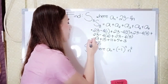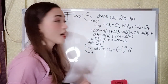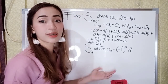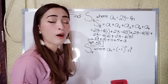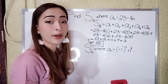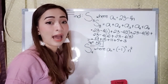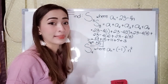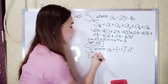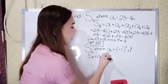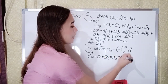So our S sub 5 is 55. Now, we have here for the next example: find S sub 4, where A sub n is equal to negative 1 raised to the nth power times n squared. So again, we will substitute 1, 2, 3 until 4 to n. So we have S sub 4 equals A sub 1 plus A sub 2 plus A sub 3 plus A sub 4.